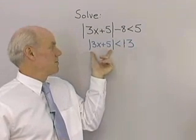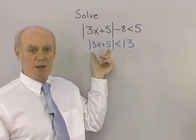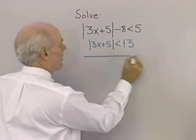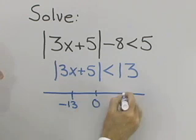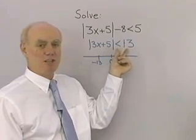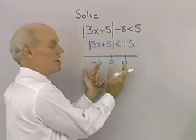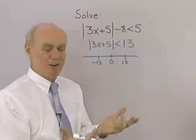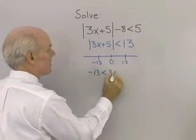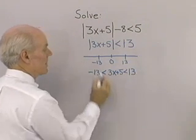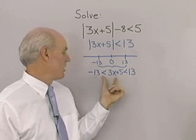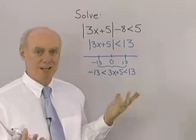The absolute value of 3x plus 5 is its distance from 0 on the number line, and that distance must be less than 13 units. Drawing a number line with 0, negative 13, and positive 13, the expression 3x plus 5 must be between negative 13 and positive 13. I can write this as the continued inequality: negative 13 less than 3x plus 5 less than positive 13.